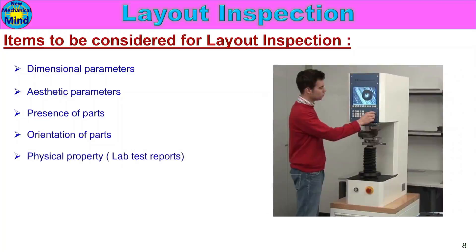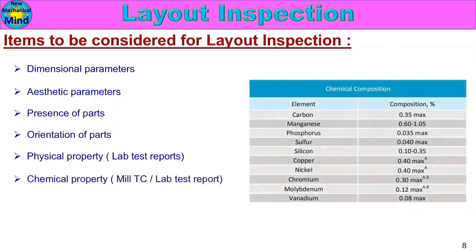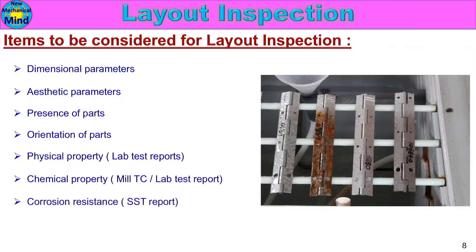Physical property lab test reports must be included — strength, hardness, and material property-related tests. For raw material, check chemical properties via mill test or lab test reports, including carbon, manganese, phosphorus, and other chemical parameters. Confirm the report from the customer test facility or mill. Also include corrosion resistance testing — for metal products, a salt spray test report should be attached to the layout inspection.